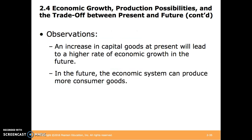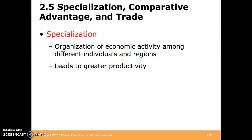A couple of key observations: an increase in capital goods at present will lead to a higher rate of economic growth in the future, because we can then purchase more capital goods in the future. The economic system can also produce more consumer goods if the PPC is shifted outward by purchasing capital goods now. Specialization — the organization of economic activity among different individuals and regions — leads to greater productivity. For instance, you're in school to gain skills for a specific job such as business, while a mechanic went to school to work on vehicles and machines. Each has specialized in a specific area so that they can help the other.